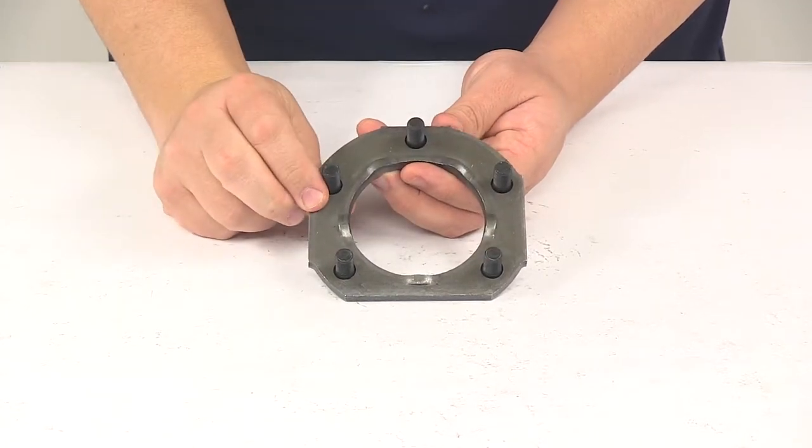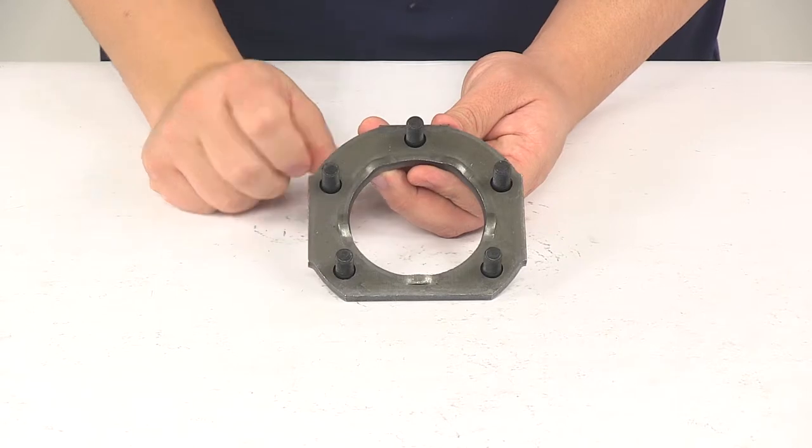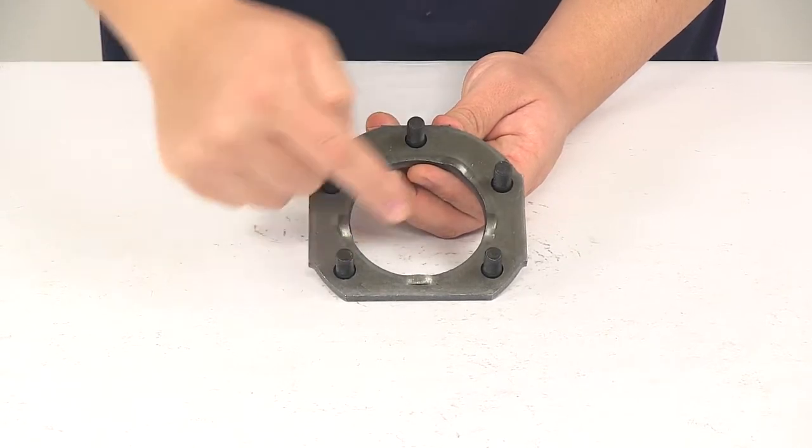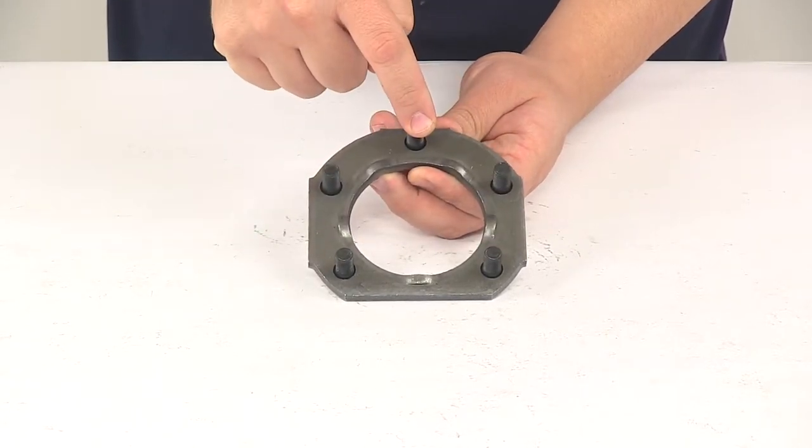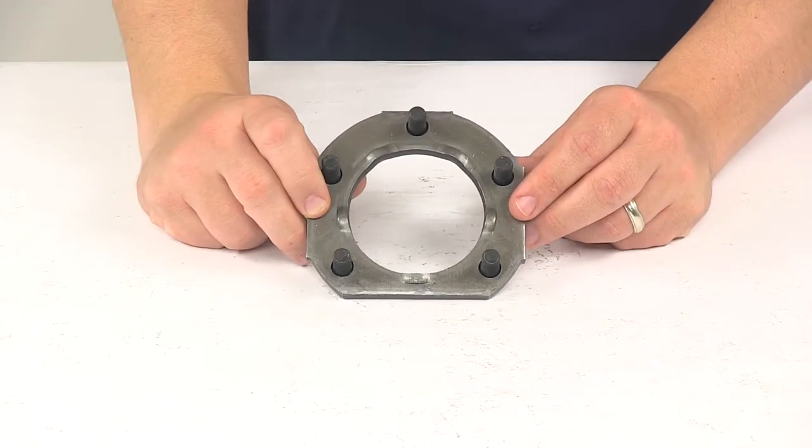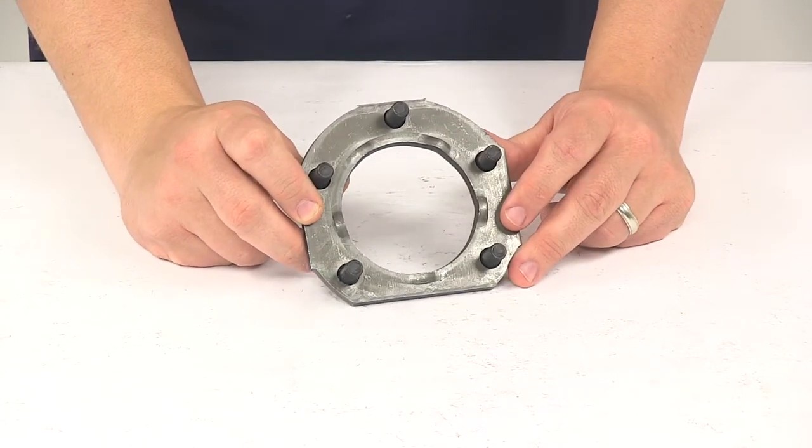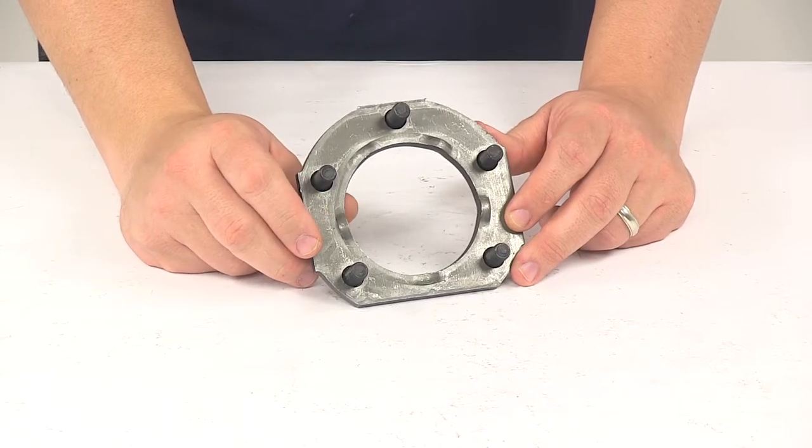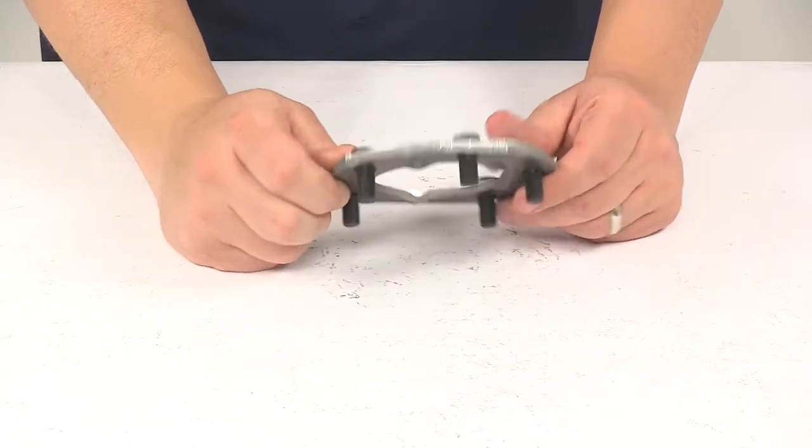This is designed to fit three inch diameter axles. The bolt diameter is three eighths of an inch, so this will work with forty four hundred pound, six thousand pound regular duty, six thousand pound heavy duty, seven thousand pound, and seventy two hundred pound axles.